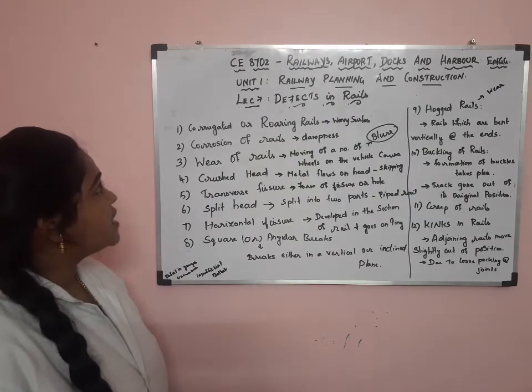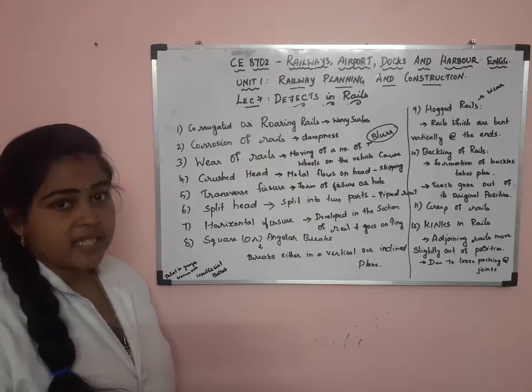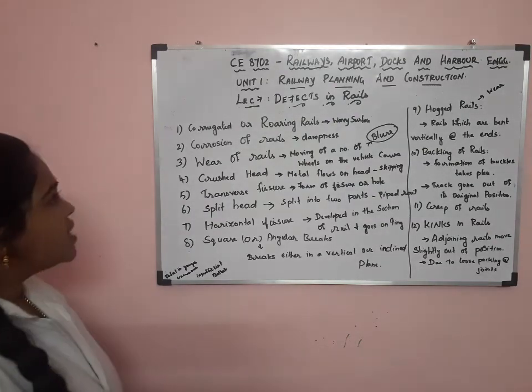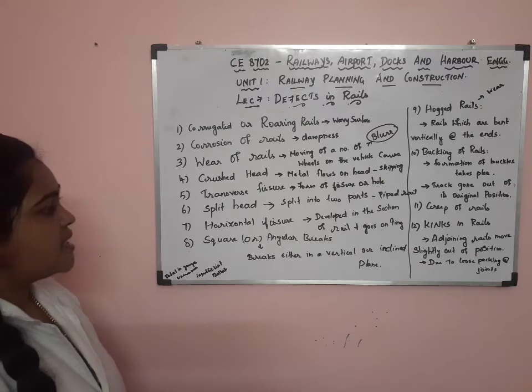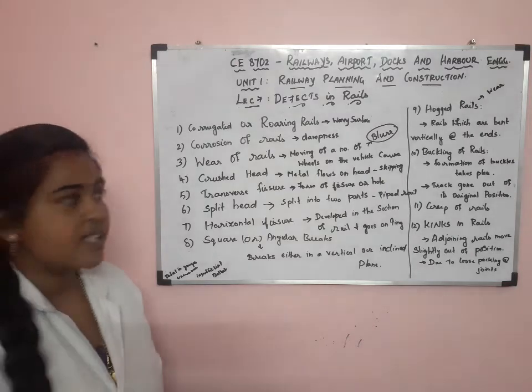This comes under Unit 1, Railway Planning and Construction. What are the Defects in Rails? There are 12 defects in rails.